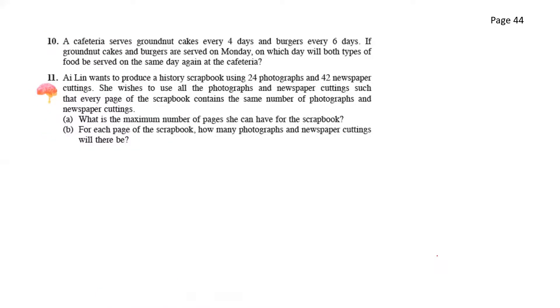A cafeteria serves groundnut cakes every 4 days and burgers every 6 days. If groundnut cakes and burgers are served on Monday, on which day will both types of food be served on the same day again in the cafeteria. So here we will have to find the lowest common multiple. So we have 4 and 6. So that will give us a 2 here. So dividing it by 2 gives us 2 and 3. Dividing it by 2 gives us 1 and 3. And lastly dividing this by 3 gives us 1 and 1. So the lowest common multiple here will be 2 times 2 times 3. So that should give us after 12 days. So let's see in the calendar.